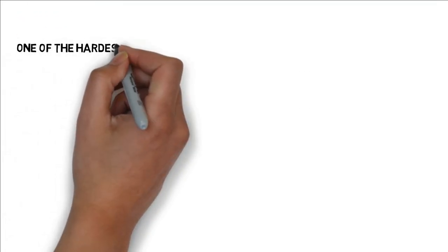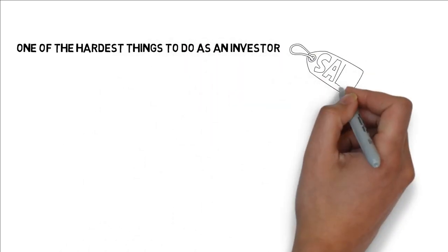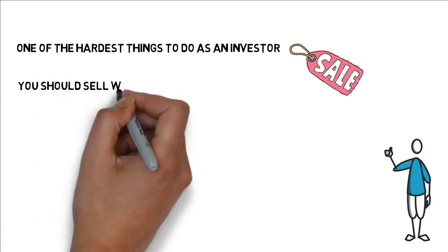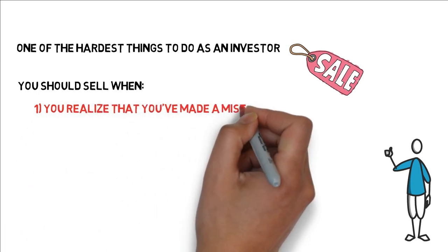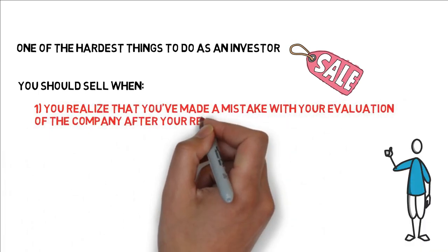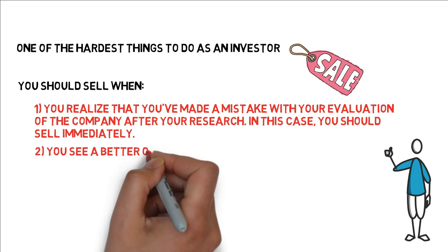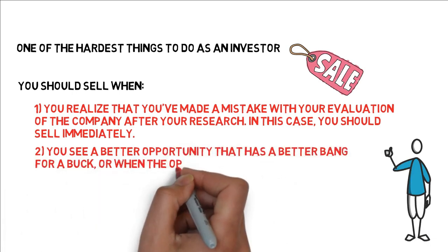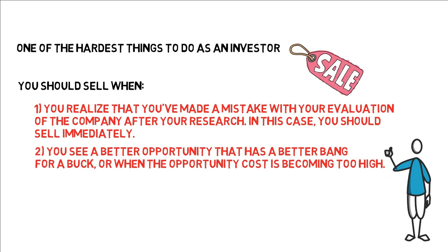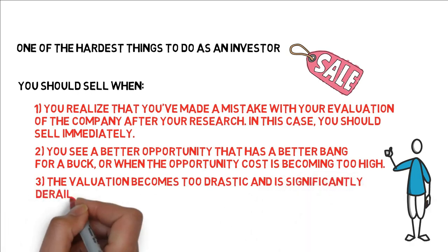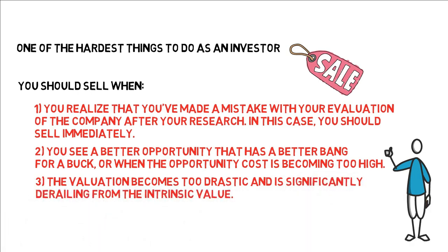In this book, he also talks about one of the hardest things to do as an investor, which is to sell. Surprisingly, Leeloo outlines that there is a crucial time for value investors to sell. He suggested that you should sell when: number one, you realize that you've made a mistake with your evaluation of the company after your research. In this case, you should sell immediately. Number two, you see a better opportunity that has a better bang for a buck, or when the opportunity cost has become too high. Number three, the valuation becomes too drastic and significantly derailing from the intrinsic value.